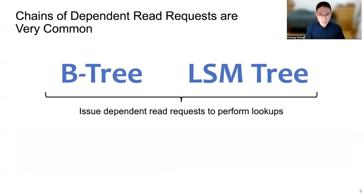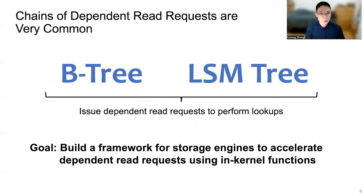We find that chains of dependent read requests are very common in storage applications. B-trees and LSM-trees, including their variants, are used as the on-disk index in most storage engines, and they both issue dependent read requests to perform lookups. Therefore, we want to build a framework for storage engines to accelerate dependent read requests using in-kernel functions.